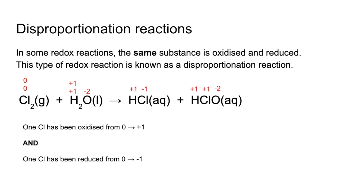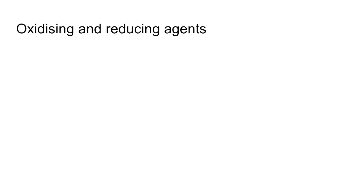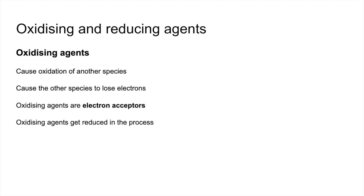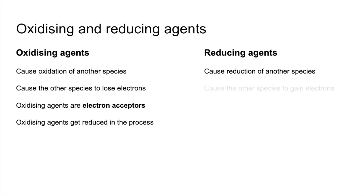We'll finish with oxidizing and reducing agents. Oxidizing agents cause the oxidation of another species — in other words, they cause the other species to lose electrons, so they themselves accept electrons and are reduced in the process. Reducing agents cause the reduction of another species: they cause the other species to gain electrons, so the reducing agent must provide the electrons and are therefore electron donors.